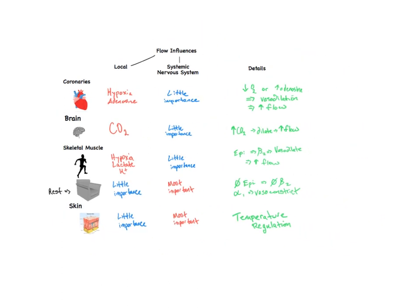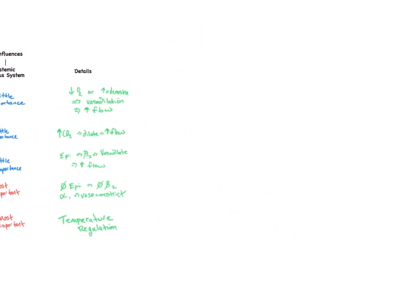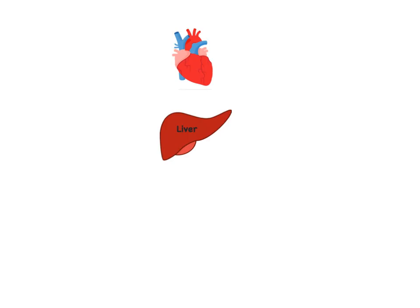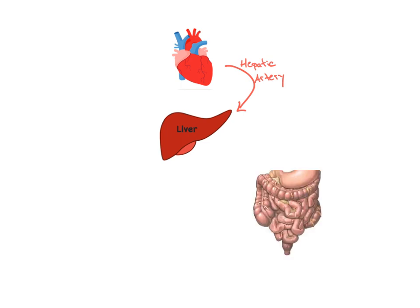Other beds, like the liver, have a completely unique role in circulation. The liver receives a dual blood supply, but each supply has its own function. It receives oxygenated blood to supply the hepatocytes via the hepatic artery, but it also receives deoxygenated blood from the portal vein. This flow has entered the liver after passing through the GI capillary beds for processing.